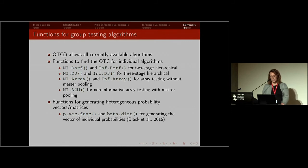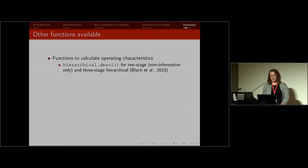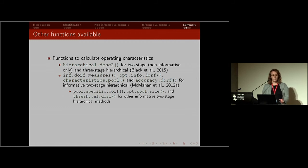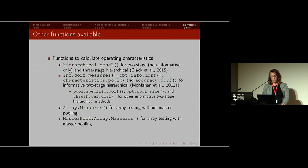The p.vec.func is based on a beta distribution function from Michael Black's 2015 paper, and the informative array probability function is from Chris MacMahan. The hierarchical.desc2 function calculates the operating characteristics for a given configuration for two stage or three stage hierarchical testing. There are also a number of functions included based on Chris MacMahan's paper on informative two stage hierarchical testing, with various methods for implementation. We focused on one with the OTC function but also incorporated functions for the other methods. And there's an array measures function and a master pool array function.